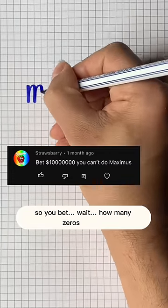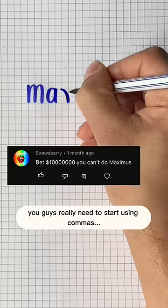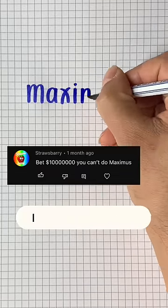So you bet... wait, how many zeros is that? You guys really need to start using commas. 10 million dollars? I can't do Maximus?